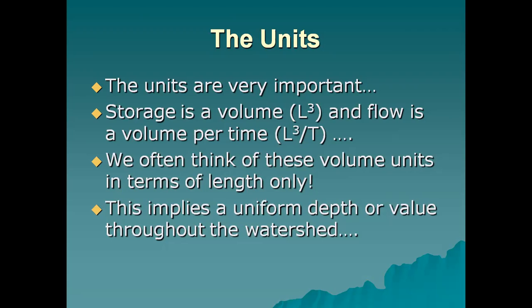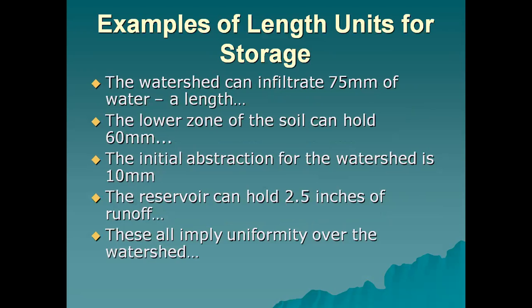Storage is a volume — length cubed — and flow is a volume per time — length cubed per time. We often think of these volume units in terms of length only. This implies a uniform depth or value throughout the watershed. Examples of length units for storage: the watershed can infiltrate 75 mm of water; the lower zone of the soil can hold 60 mm; the initial abstraction for the watershed is 10 mm; the reservoir can hold 2.5 inches of runoff. These all imply uniformity over the watershed.